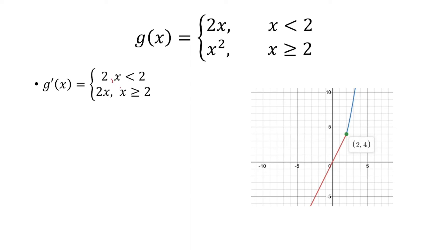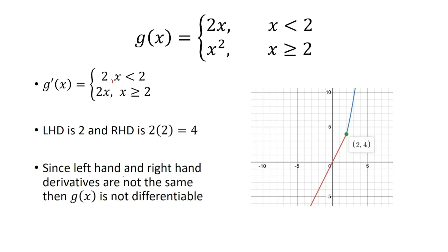Now we want to evaluate this at x equals 2. The left-hand derivative is the derivative of 2x, which is 2. The right-hand derivative is 2x, and plugging in x equals 2 gives us 4. So the left-hand derivative is 2 and the right-hand derivative is 4. Therefore, g of x is not differentiable. We conclude that g of x is continuous but not differentiable.